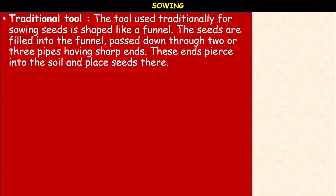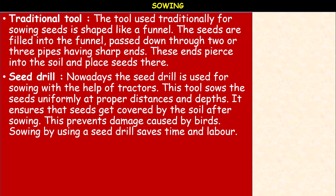The traditional tool used for sowing seeds is shaped like a funnel. Seeds are filled into the funnel and pass down through two or three pipes with sharp ends, which pierce the soil and place the seeds there. Nowadays, a seed drill is used for sowing with the help of a tractor. This tool sows seeds uniformly at proper distances and depths.